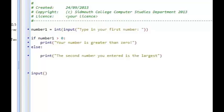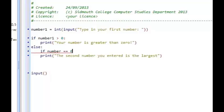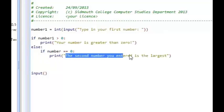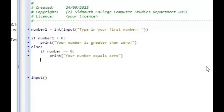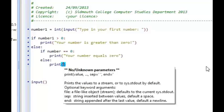We say that if number1 is greater than zero, print your number is greater than zero. Else, and then we start off another if statement. If number1 equals zero, then we're going to print your number equals zero. And if it's not greater than zero or equal to zero, then of course it's going to be less than zero. So we can type in your number is less than zero.